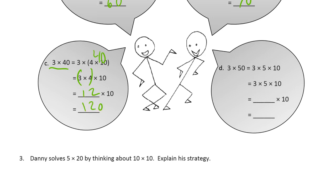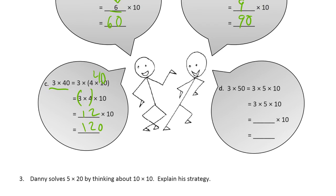We want to get it set up so that we're multiplying by ten last. So look at the three times fifty. Well, that's the same as three times five times ten, right? Because that's the fifty. And then what if we did the three times five first? That would be fifteen times ten. That's one hundred fifty.